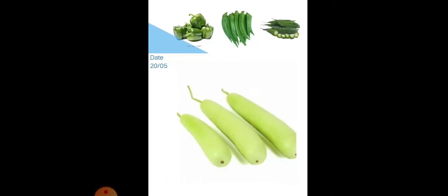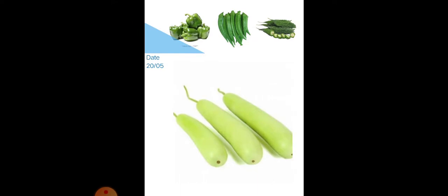Next question. Name some green vegetables. Capsicum, ladyfinger, bitter gourd, bottle gourd. Repeat it. Capsicum, ladyfinger, bitter gourd, bottle gourd.